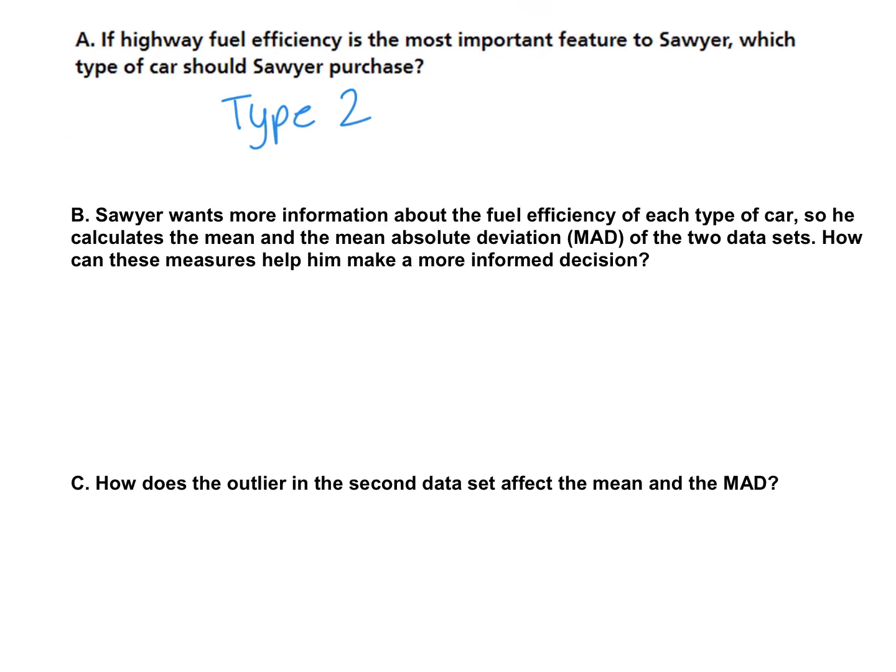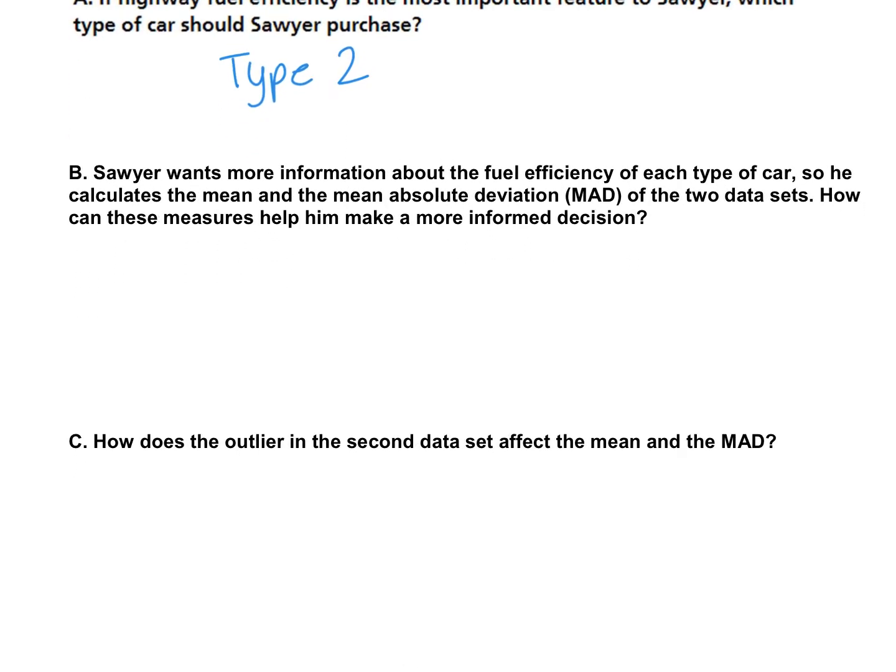So part B: Sawyer wants more information about the fuel efficiency of each type of car, so he calculates the mean and the mean absolute deviation of the two data sets. How can these measures help him make a more informed decision?